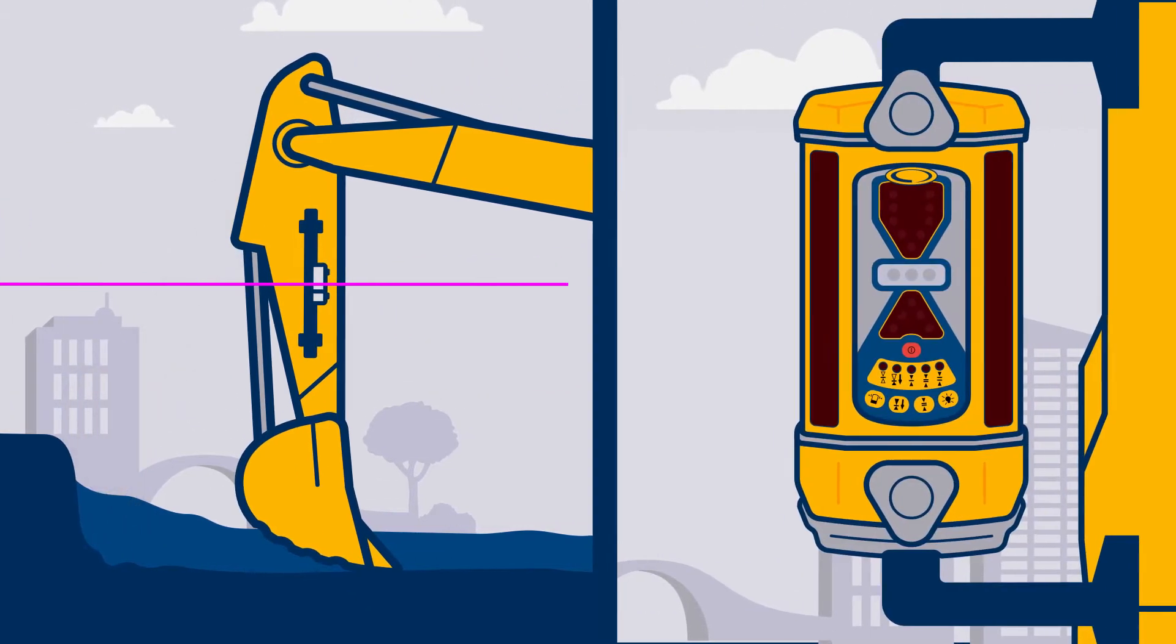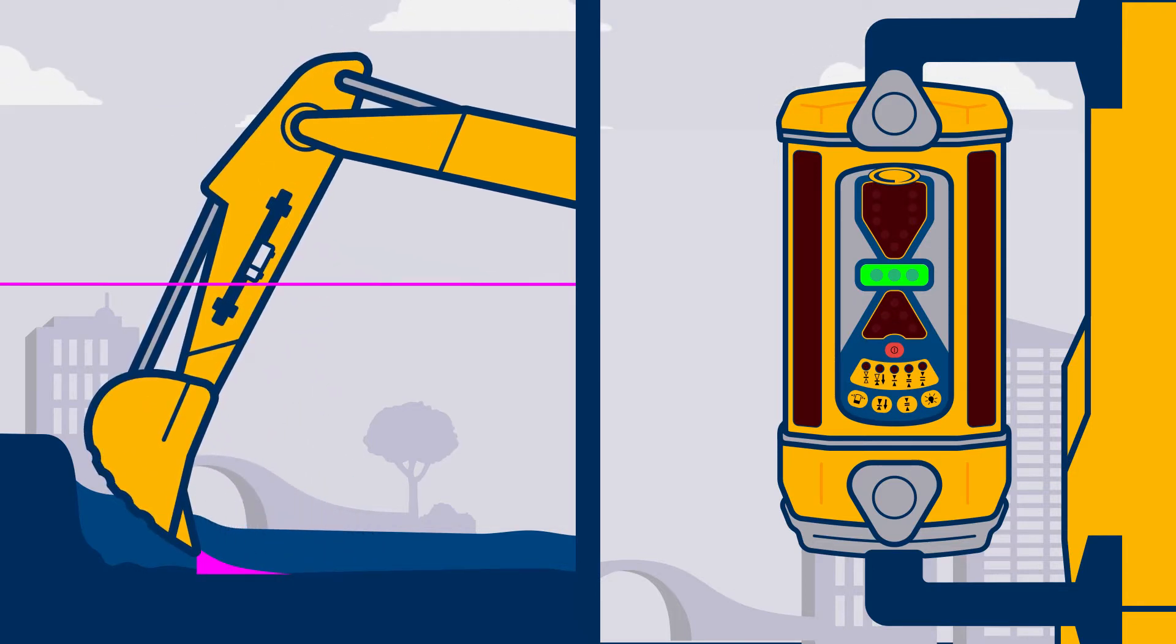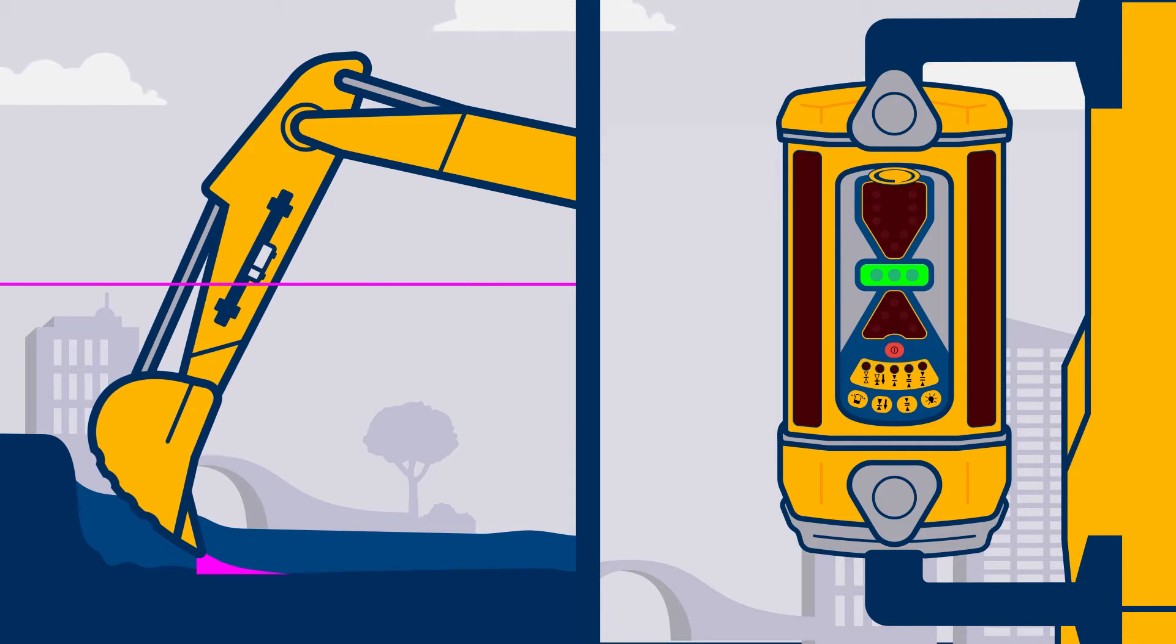The correct elevation is displayed only if the dipper arm is in plumb position. The display indicates on-grade even though the tilt position on the dipper arm creates an elevation error.